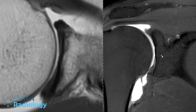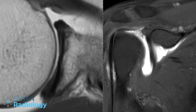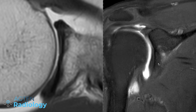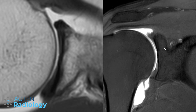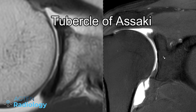So what's that? Is that an osteochondral lesion? Is it cartilage wear, a cartilage defect, or is it just a variant? And you probably guessed it by now — it's just an anatomic variant and this is called the tubercle of Asaki, or Asaki's tubercle.